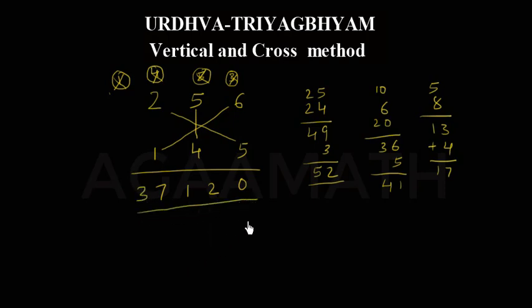Continuing 256 into 145: next we get 5 into 1 is 5, 2 into 4 is 8, total 13, plus carried 4 is 17. Write 7 and carry 1. Then 2 into 1 is 2, plus carried 1 is 3. So the result is 37120.